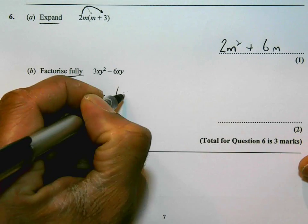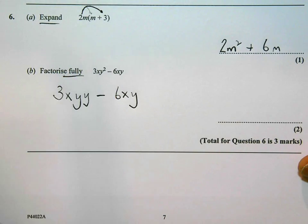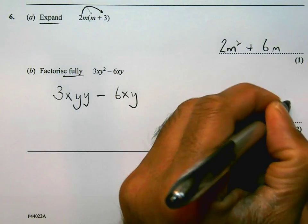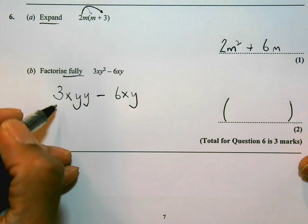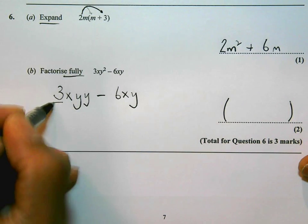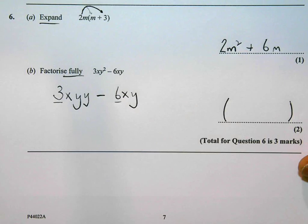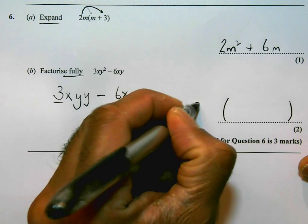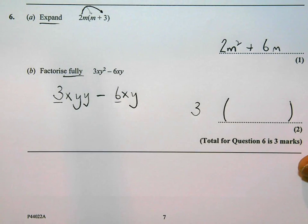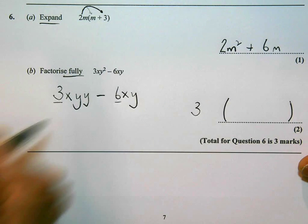Minus 6xy, well that's the same, 6xy. I'm going to try to think about things that are common to both. And when I factorize, I need to first of all look at the numbers. 3 and 6. What's the biggest number that can go into both of those? 3 can go into both 3 and 6.